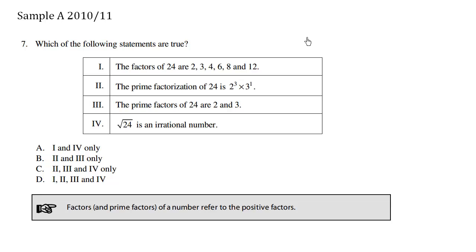Which of the following statements are true? 1. The factors of 24 are 2, 3, 4, 6, 8, 12.